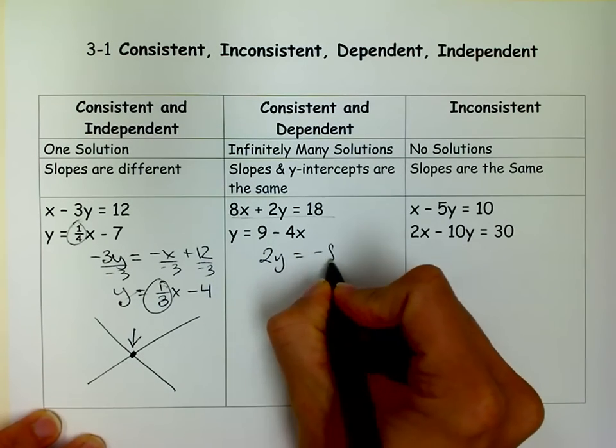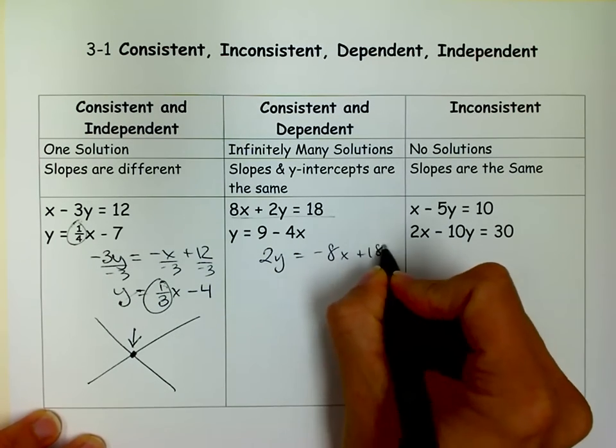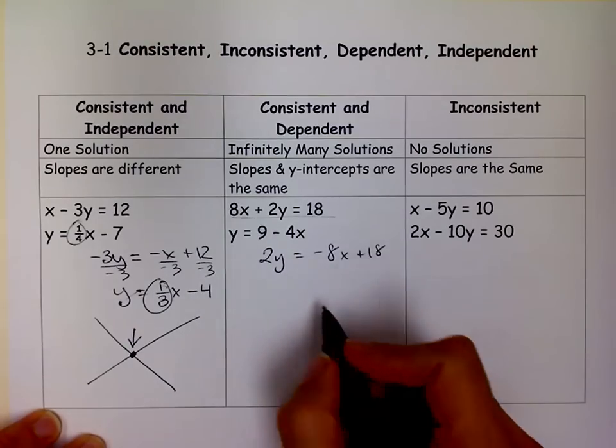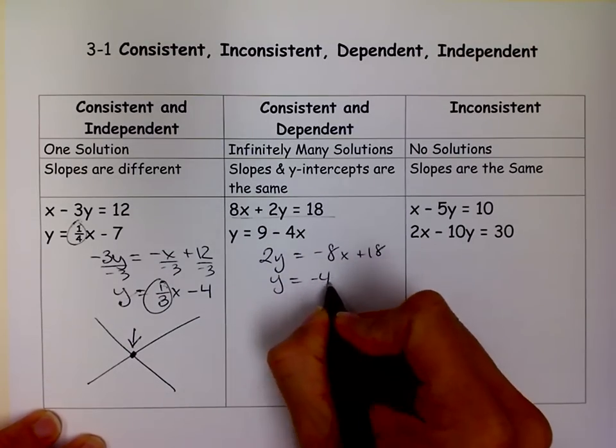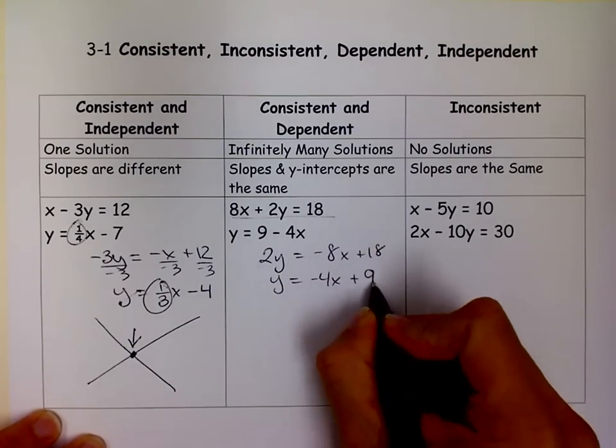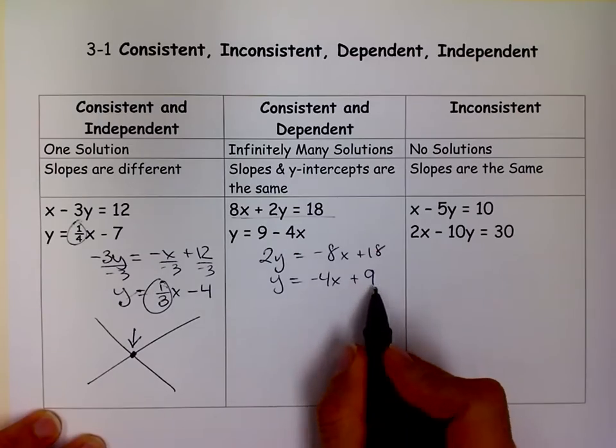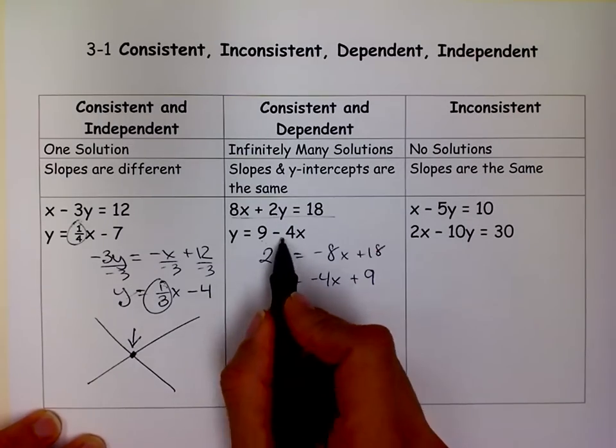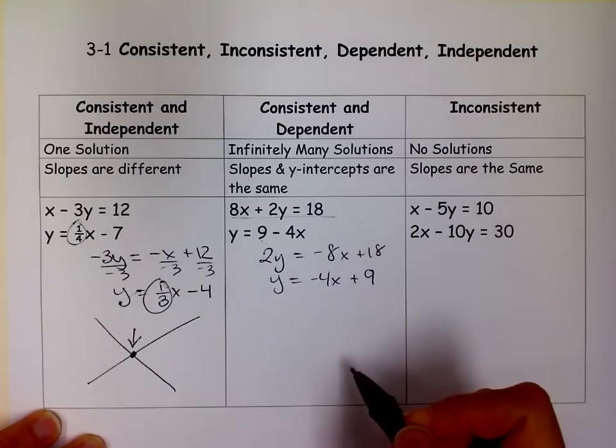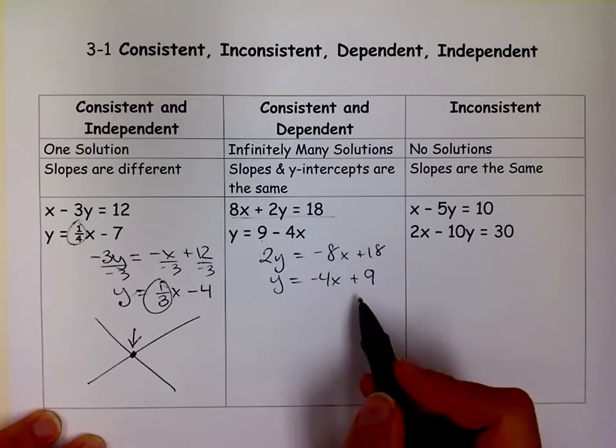So 2y equals negative 8x plus 18. When I bring the 8x over, if I divide by 2, I get y equals negative 4x plus 9, which is the same thing as y equals 9 minus 4x. They just switched the order. Signs are the same in front of all of them, so be careful with that.